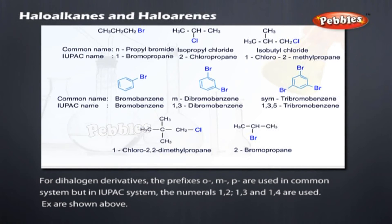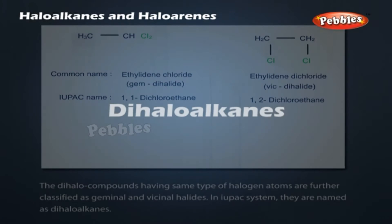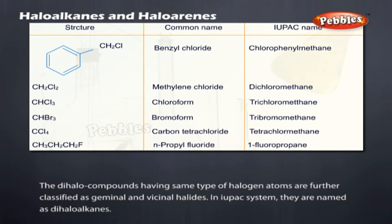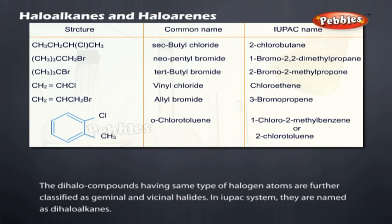Dihaloalkanes: dihalogen compounds having the same type of halogen atoms are further classified as geminal halides and vicinal halides. In the IUPAC system, they are named as dihaloalkanes.